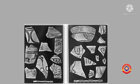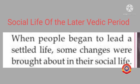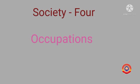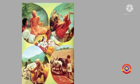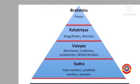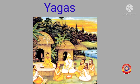Let's see the social life of the Later Vedic period. When people began to lead a settled life, some changes were brought about in their social life. The society got divided into four groups based on occupations: the Brahmins, the Kshatriyas, the Vaishyas, and the Sudras. This stratification is known as Chaturvarniya. The Brahmins used to propitiate the gods for the well-being of the people; those who fought battles were known as Kshatriyas; traders were called Vaishyas; and menial laborers were known as Sudras. In the Later Vedic period, this mode of worship lost its importance and instead Yagas became important, most of which involved animal sacrifice on a large scale.